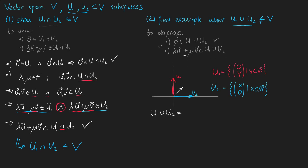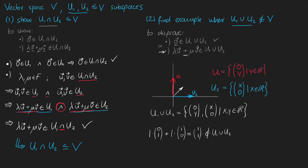Before we can disprove our statement we need to know what the union of u1 and u2 looks like. Combining u1 and u2, the union only includes the y-axis and the x-axis. As a last step, we disprove the closure statement using a specific example: with lambda equal to one and u equal to the vector (0, 1), we add mu times v, where mu equals one and v equals (1, 0). The result is the vector (1, 1), which is definitely not included in the union of u1 and u2, since the union is only composed of the y-axis and the x-axis, and the point (1, 1) lies on neither.